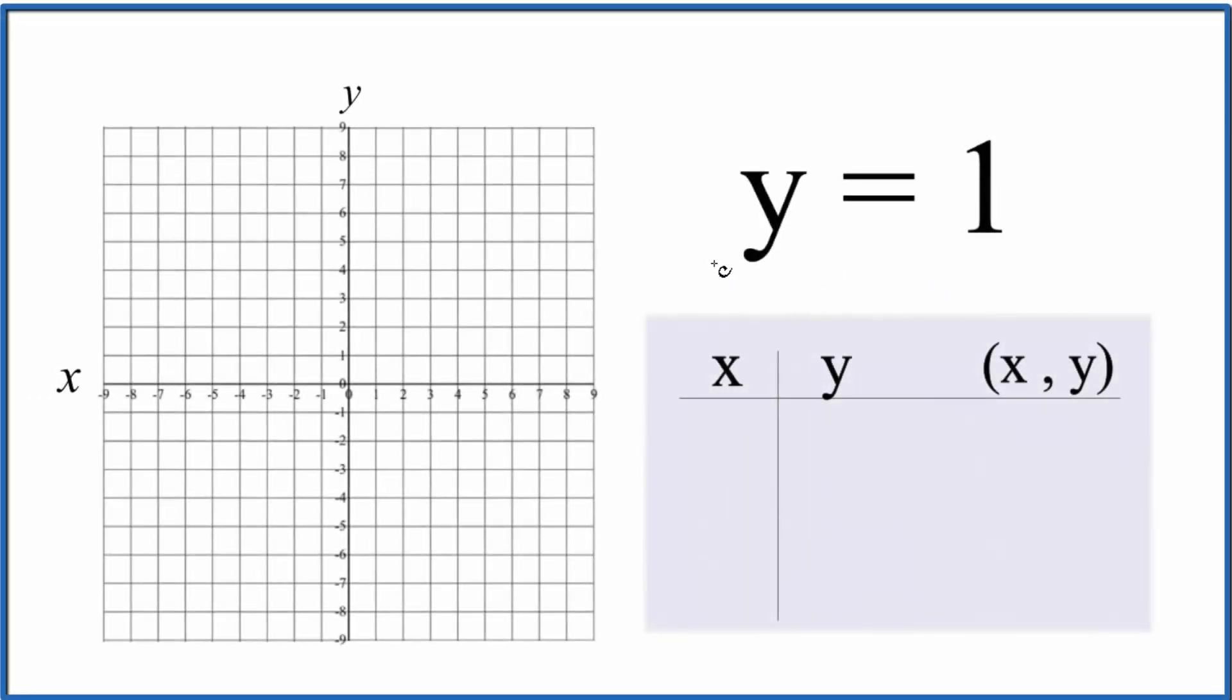Let's graph the equation for the line y = 1. Simply put, we go to the y-axis, where y equals 1 right here, and then we can just put a horizontal line through it like this.